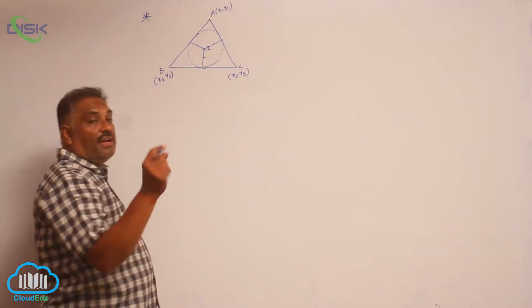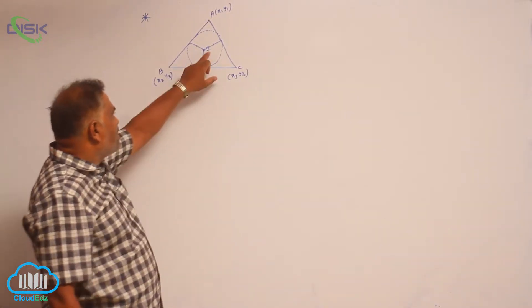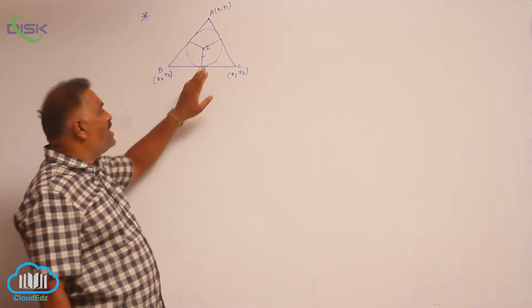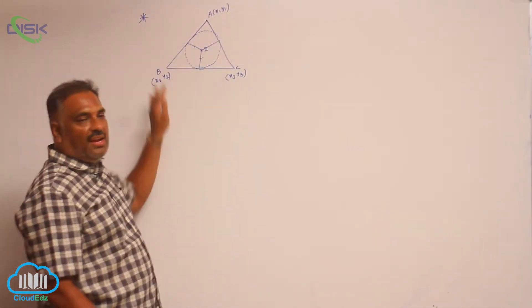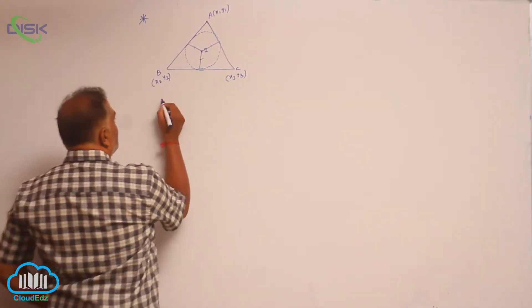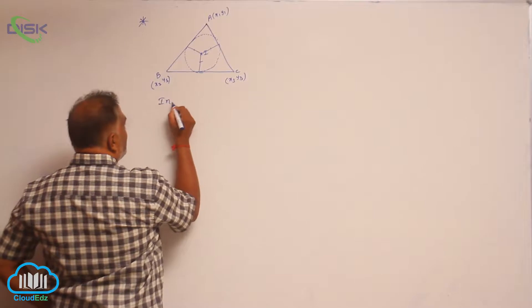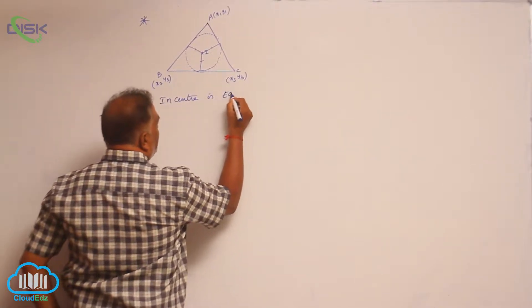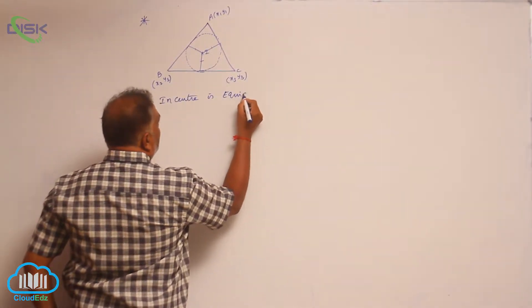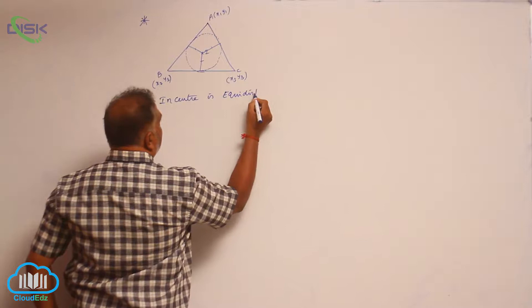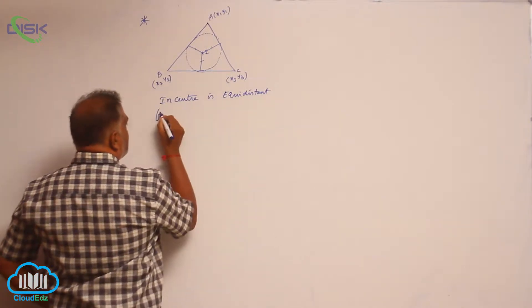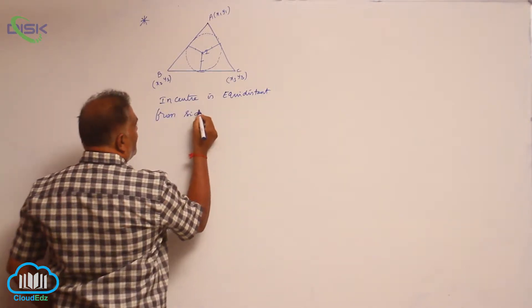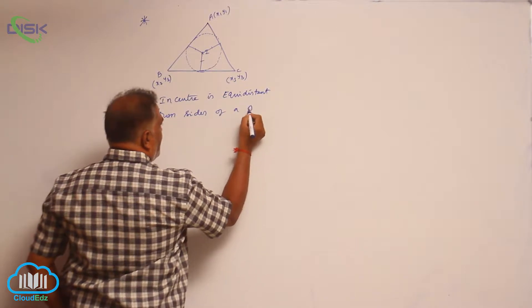We can conclude that the incenter is equidistant from the sides of a triangle.